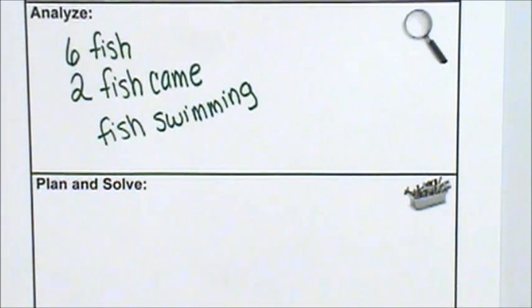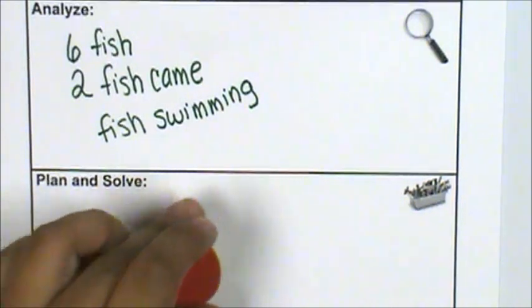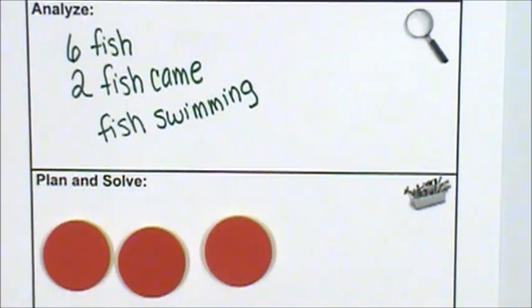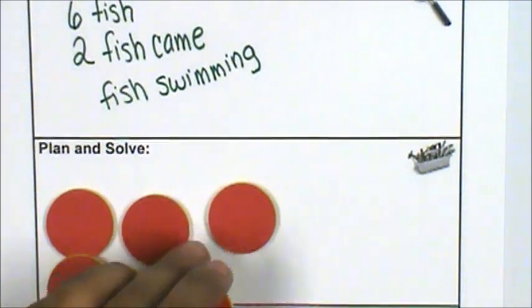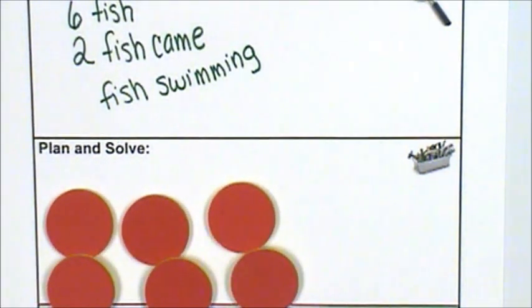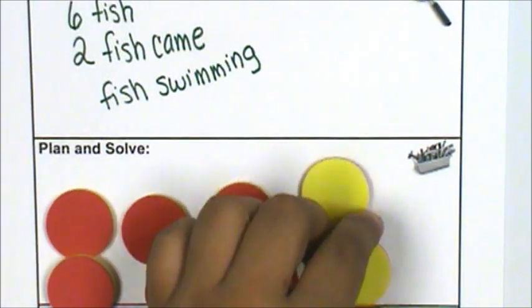So there were six fish, there's three, four, five, six fish. And then two more fish swam to join them, one, two.